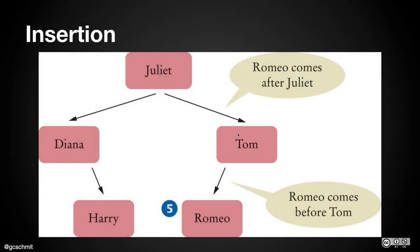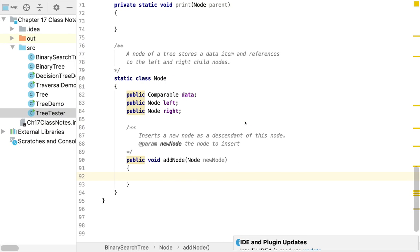We can't write a plain else — we have to write 'else if diff is greater than zero'. If the difference is zero, the two nodes are equal and we do nothing, preserving set behavior — no duplicates allowed. The textbook does this comparison the opposite way, so if your textbook's code looks different, that's why.